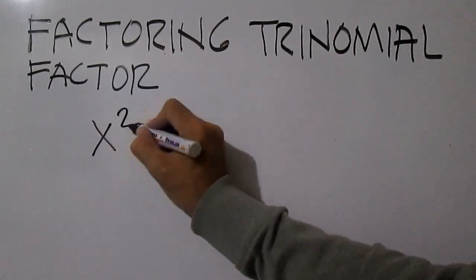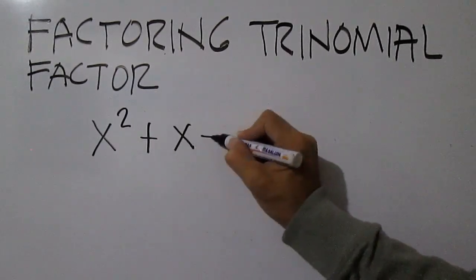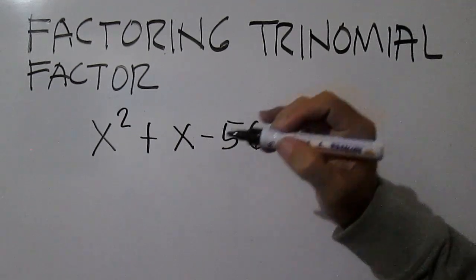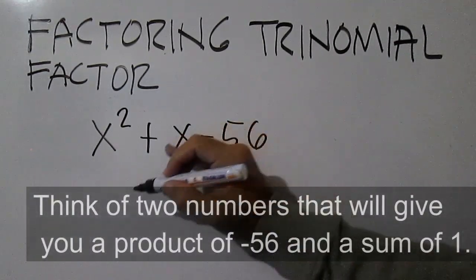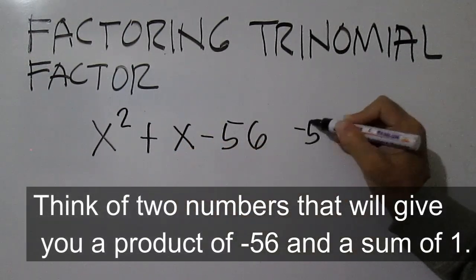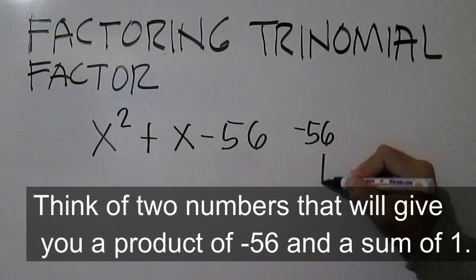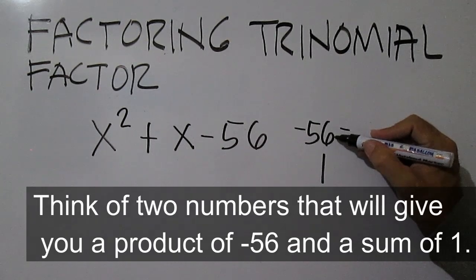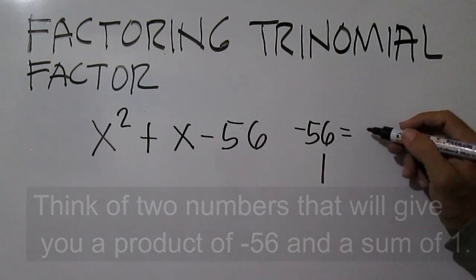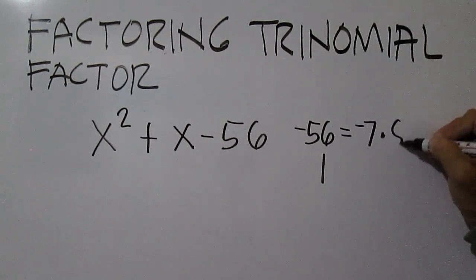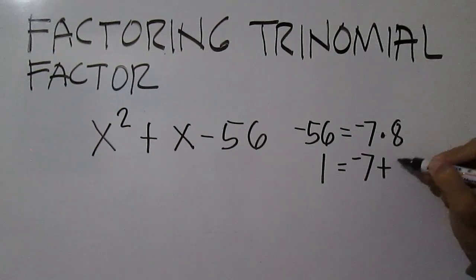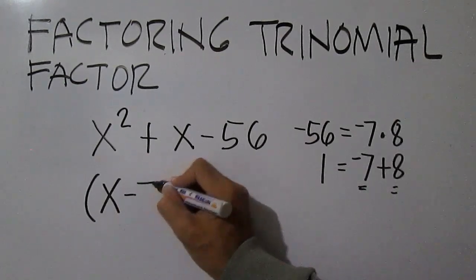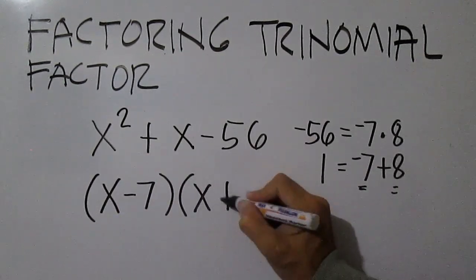Factor x squared plus x minus 56. To factor, just think of two numbers that will give you a product of negative 56 and a sum of 1. Negative 56 is equal to negative 7 times 8. 1 is equal to negative 7 plus 8. The factors are x minus 7 and x plus 8.